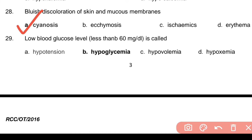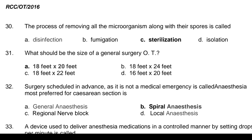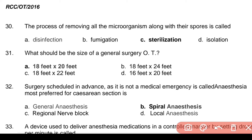Question 28: Bluish discoloration of skin and mucous membranes — Answer: a. Cyanosis. Question 29: Low blood glucose level is called — Answer: b. Hypoglycemia. Question 30: The process of removing all microorganisms along with their spores — Answer: c. Sterilization.